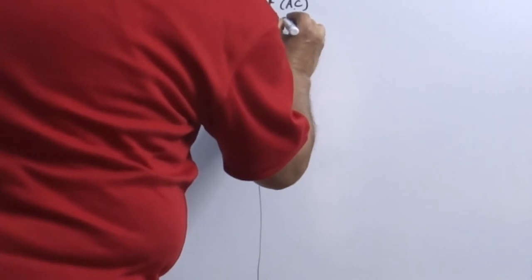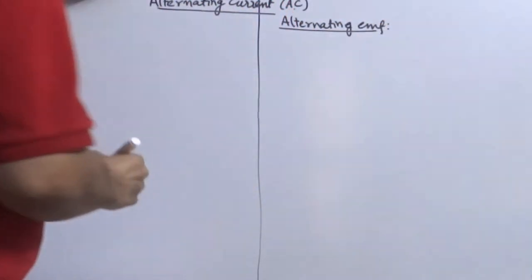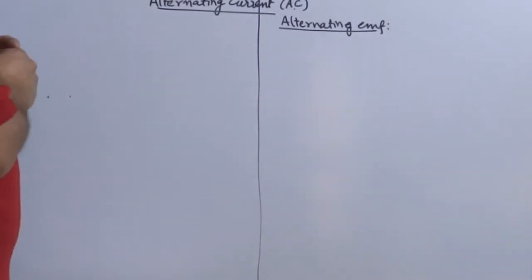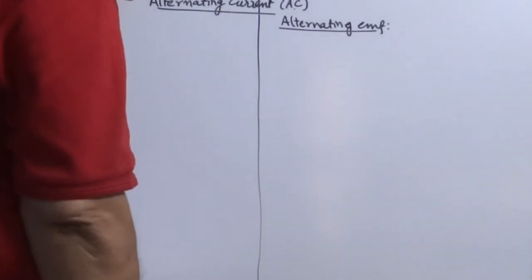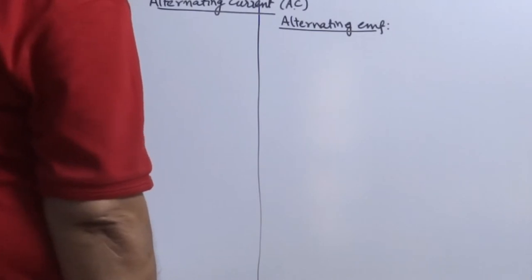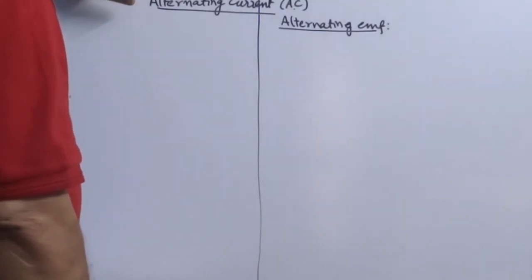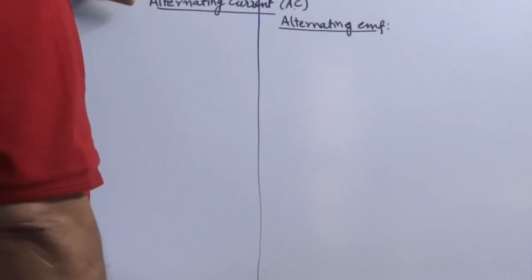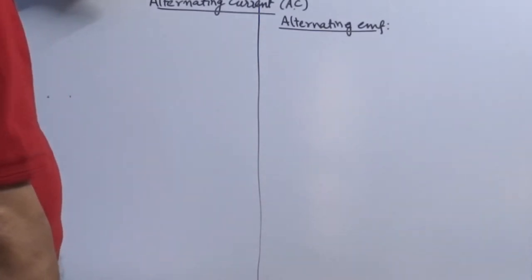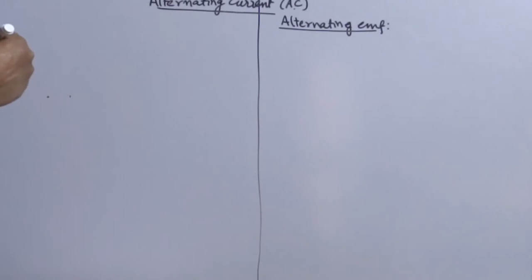Before that, first you understand what is alternating EMF. An EMF whose magnitude changes continuously with time and the direction reverses periodically is called alternating EMF. Or you can say it is an EMF whose magnitude as well as direction changes with respect to time periodically.